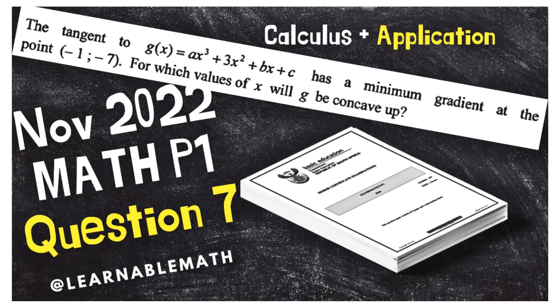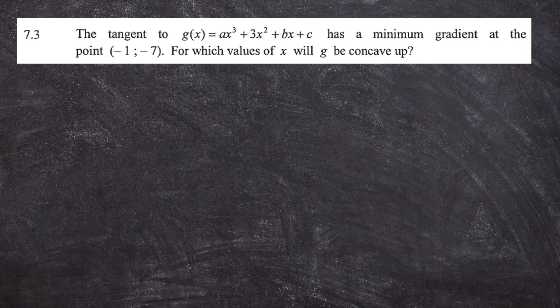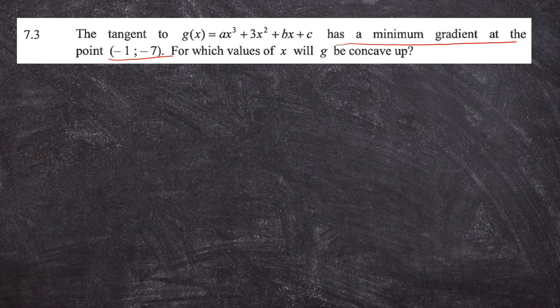Without wasting any time, let's go. Question 7.3: the tangent to g, which is your cubic function, has a minimum gradient at the point (-1, -7). For which values of x will g be concave up? So you can see this is a cubic function where we start to talk about concavity. They want the values of x for which this function will be concave up, and they've given you very important information — that this graph's tangent has a minimum gradient at the point (-1, -7).